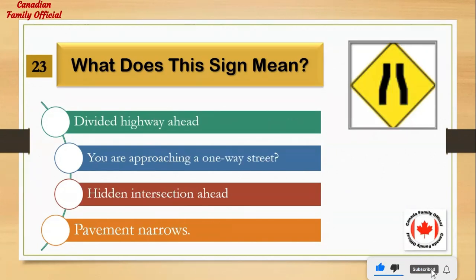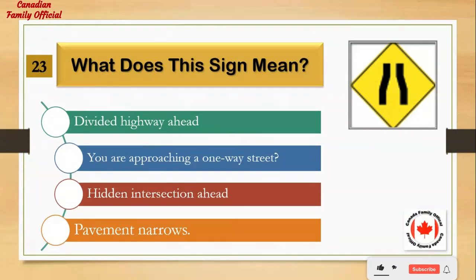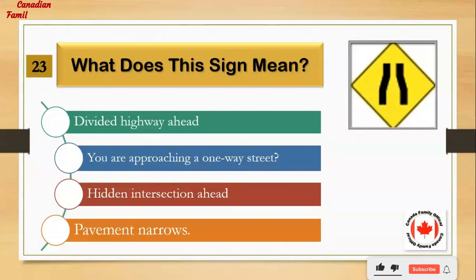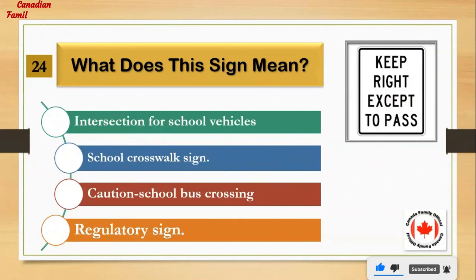What does this sign mean? Number 1: divided highway ahead. Number 2: you are approaching a one-way street. Number 3: hidden intersection ahead. Number 4: pavement narrows. And the answer is: pavement narrows.